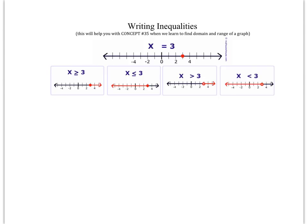If I just have a number line and I put a dot on it, that simply represents x equals 3. Now if I have a closed dot on 3 but shade everything to the right, those are all the numbers bigger than 3 — but because I have a closed dot, I also include 3 itself. So we represent this as x is greater than or equal to 3.